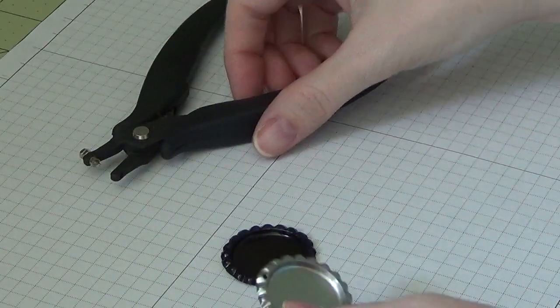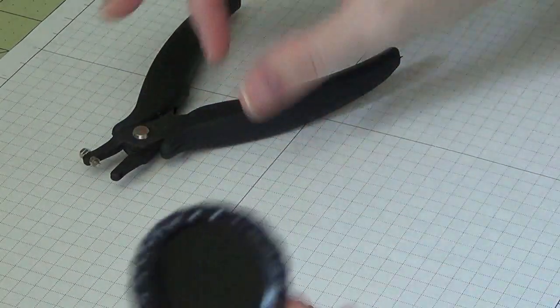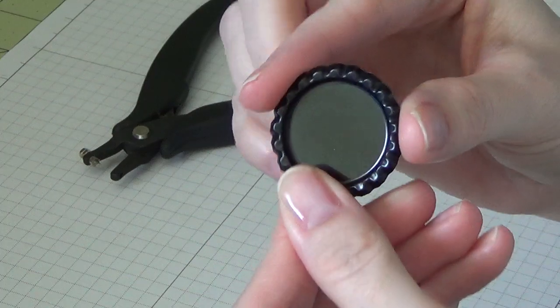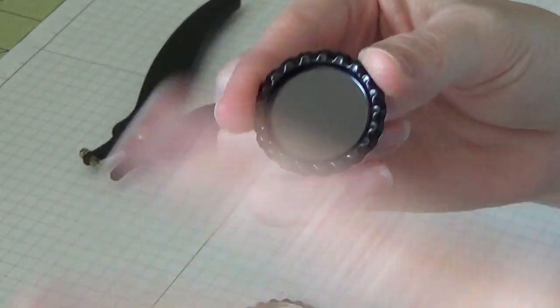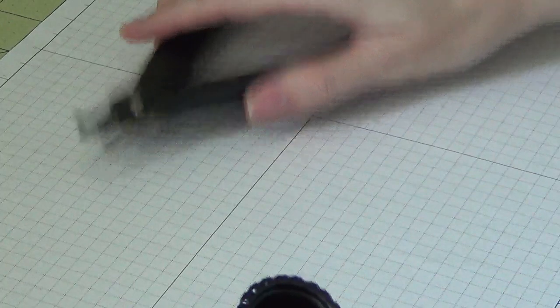So that's how you punch holes in your bottle caps. I'm going to do a black one for you. I wasn't sure if you could see the silver one in the camera very well, but I'm going to try.